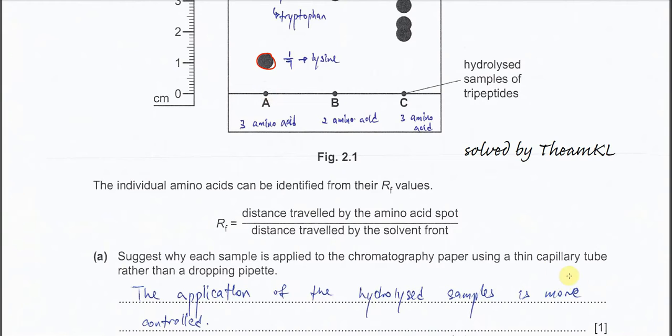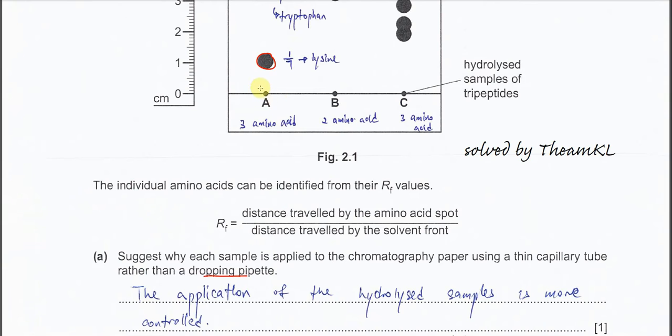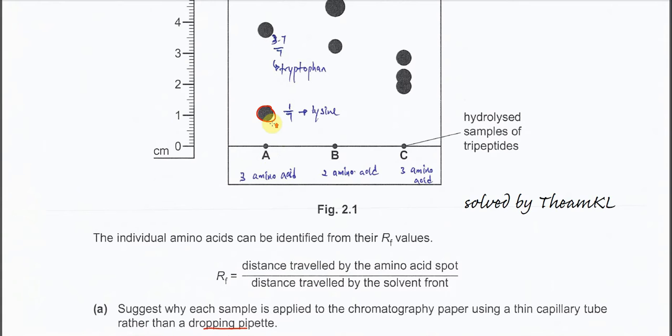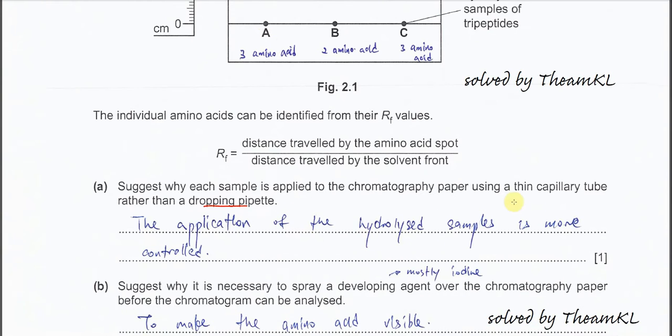So when we use the capillary tube, we can control the spotting area and later, it has a better separation. If we use dropping pipette, because the dropping pipette, it might give a larger spot here. Later when we do the separation, it might not be really nice. So we try to let this spot as small as possible or it's being controlled well. So that's why we use the thin capillary tube rather than dropping pipette.